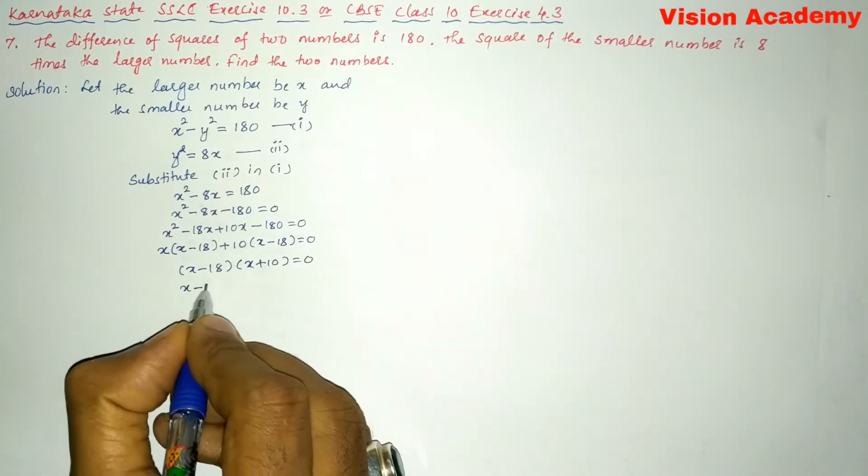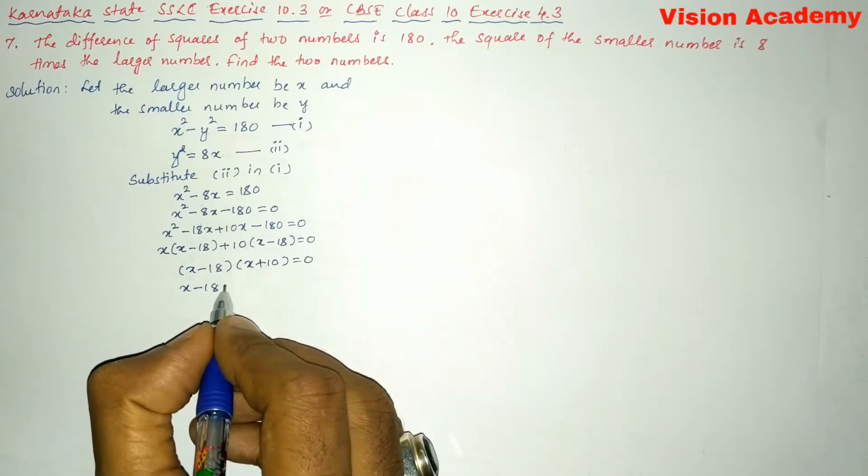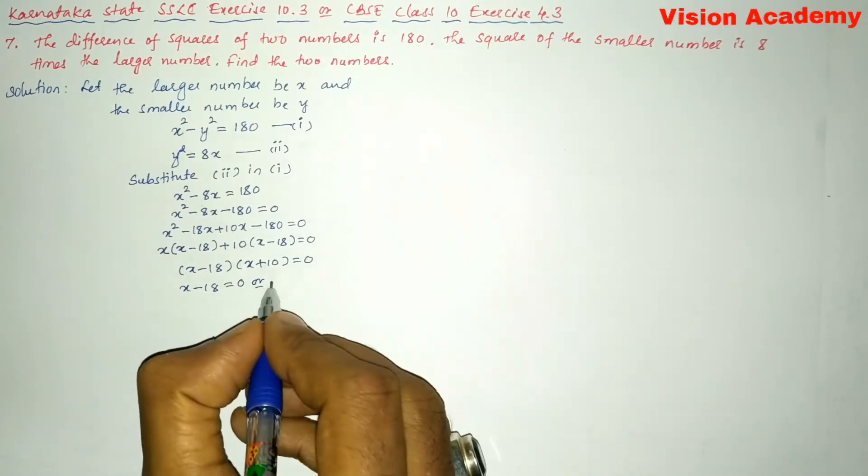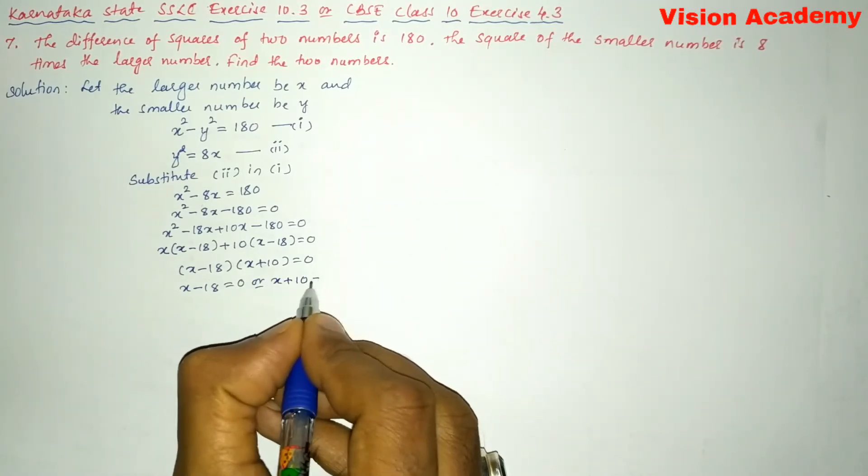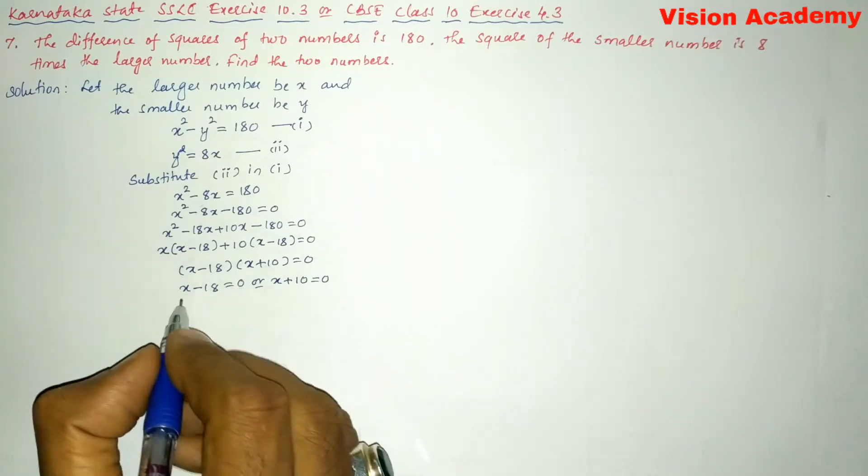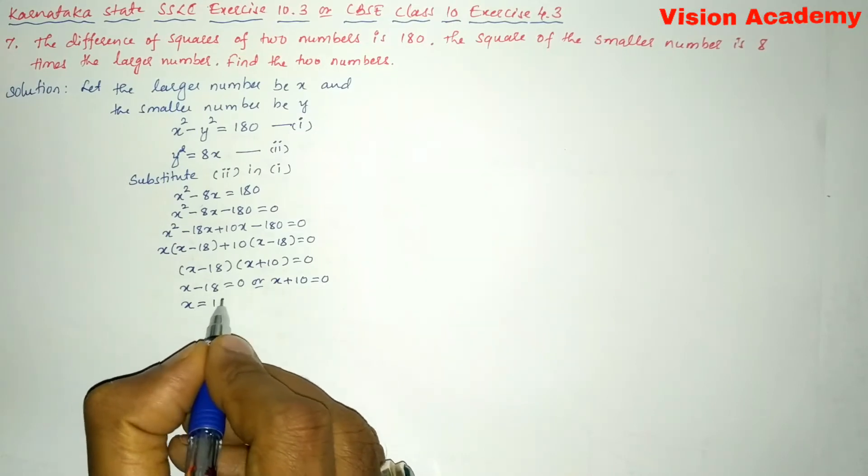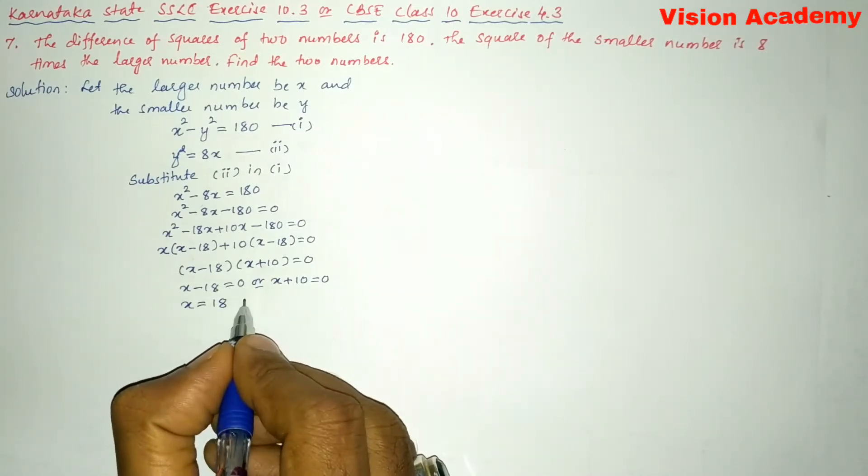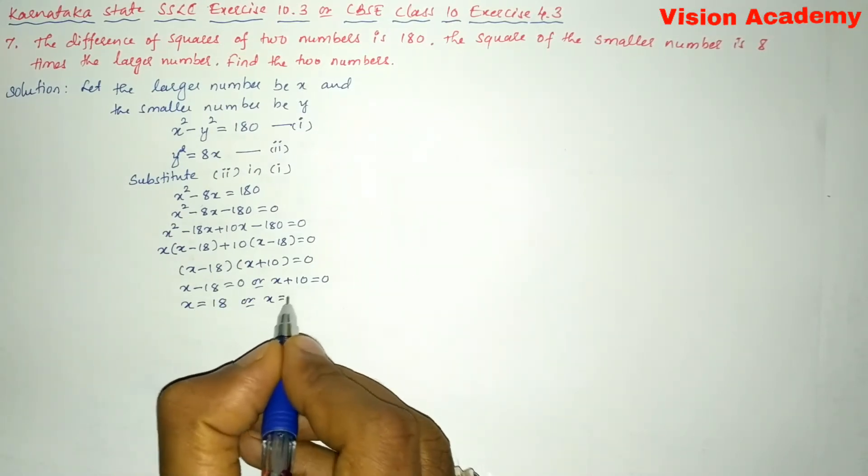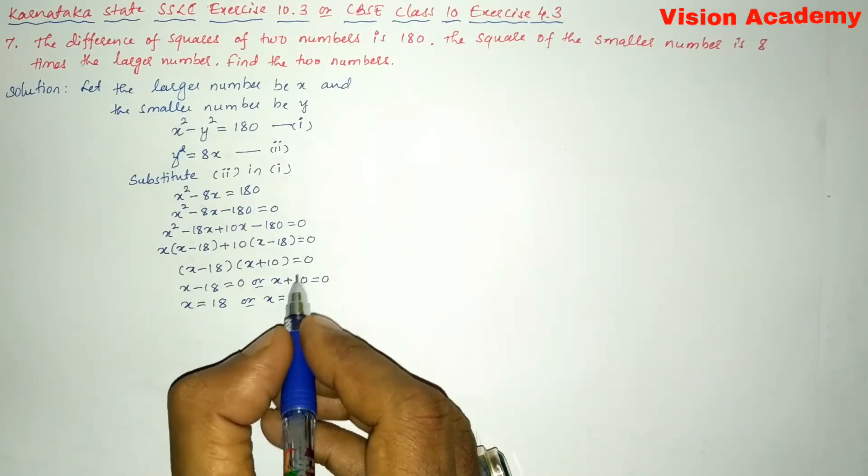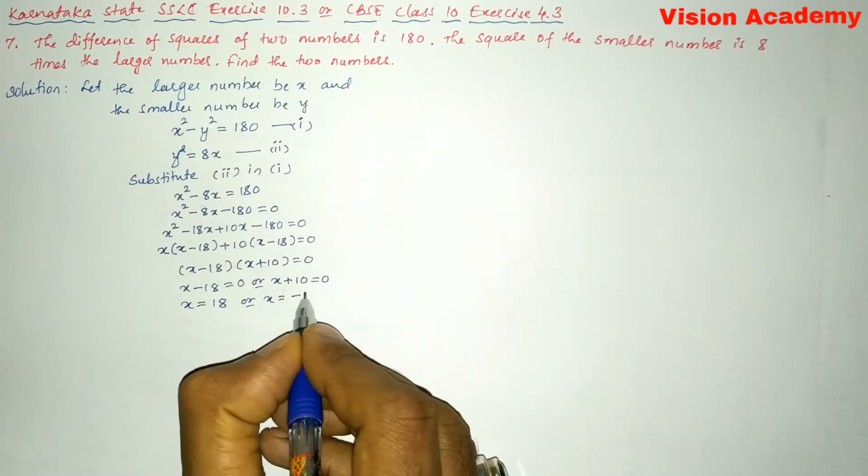This can also be written as x - 18 = 0 or x + 10 = 0. If I transform 18 from LHS to RHS, it becomes x = 18. Or here, transforming 10 to the other side, x = -10.